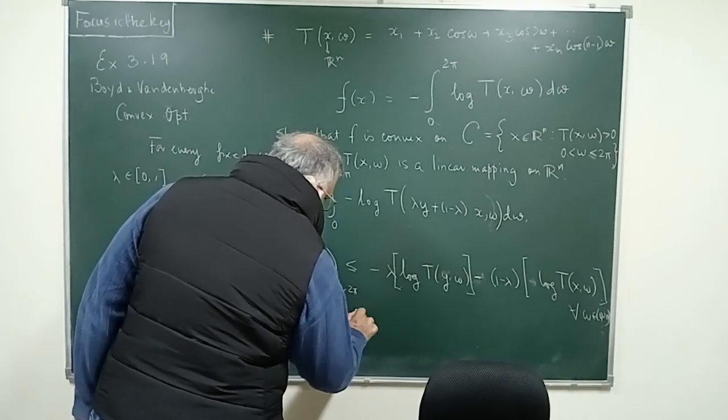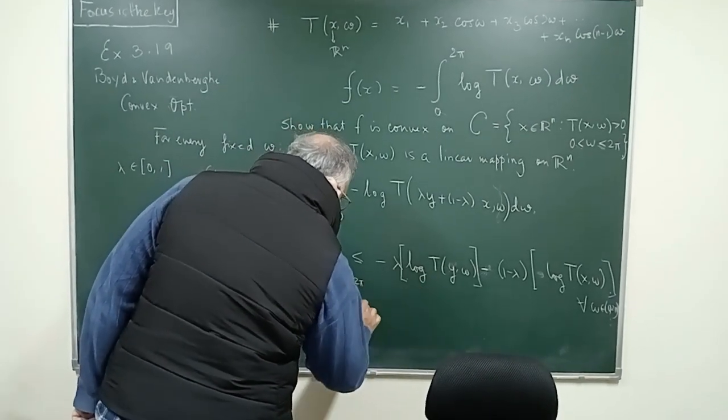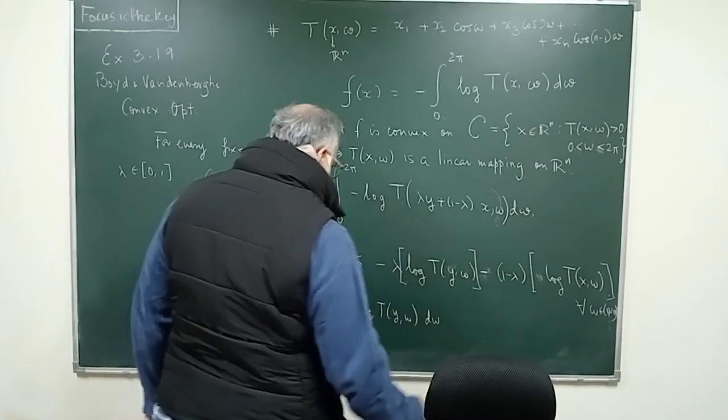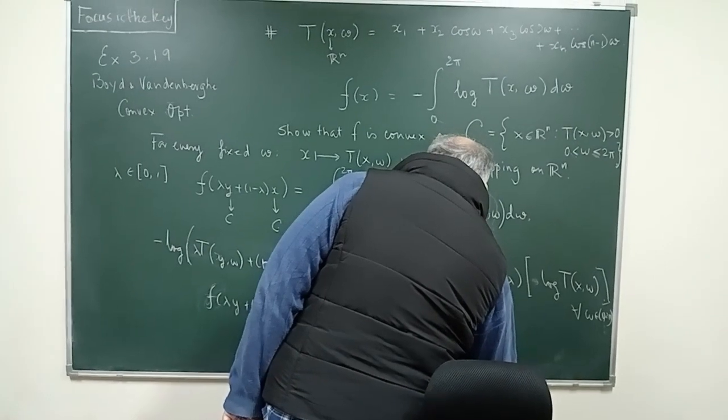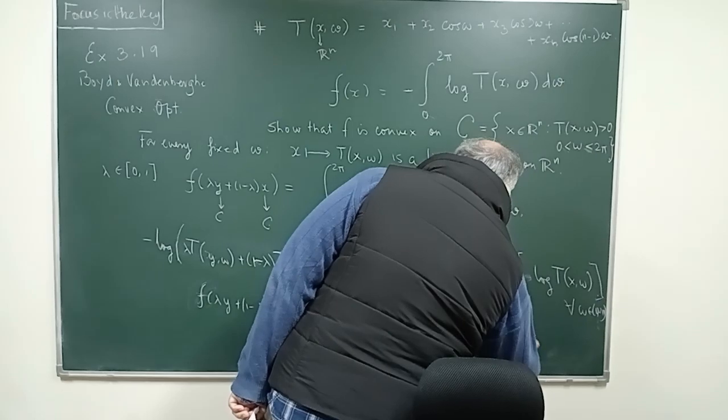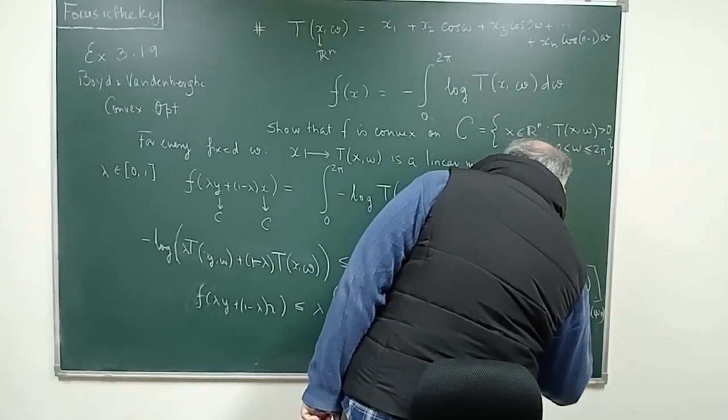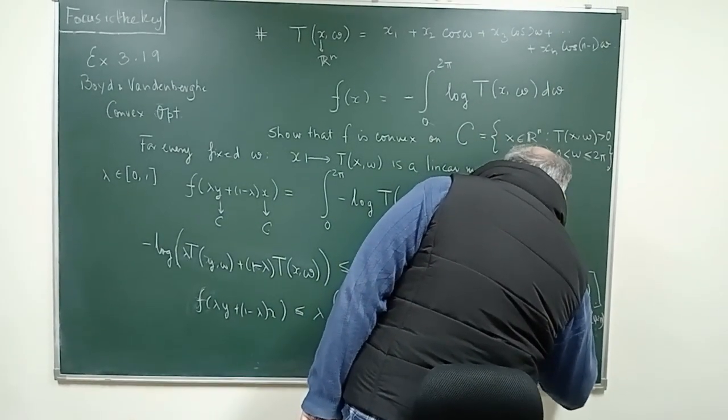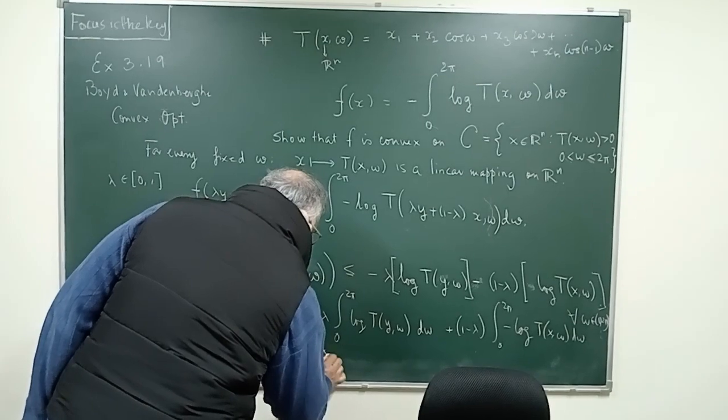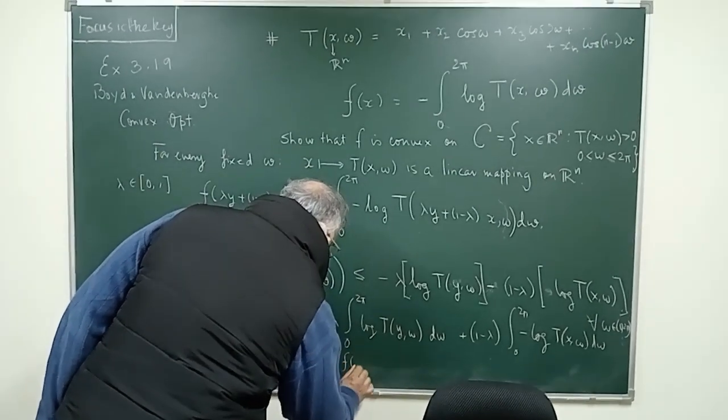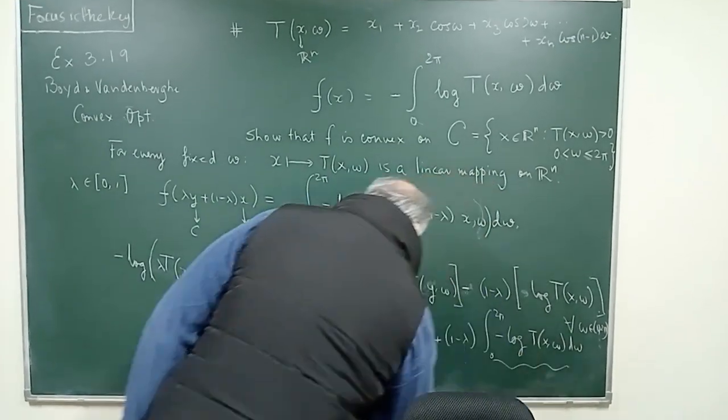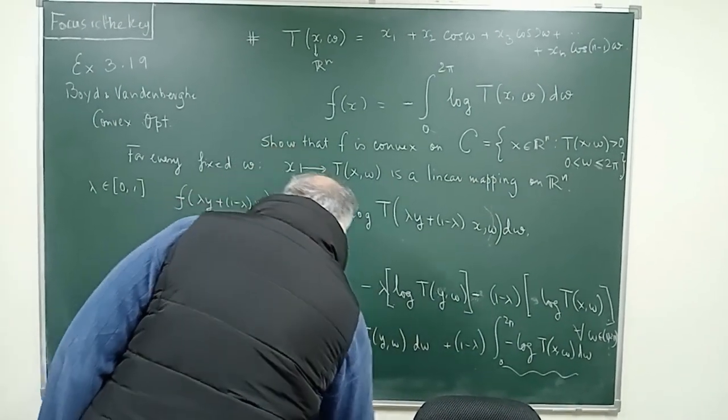I can understand that this part is nothing but this part because of the linearity of T for every ω. This will now become -log(T(y,ω)) dω plus (1-λ) times the integral from 0 to 2π of -log(T(x,ω)) dω. And what is this? This simply means this is exactly equal to λf(y) by my definition, and this part is exactly equal to f(x). So f(λy + (1-λ)x) is less than or equal to λf(y) + (1-λ)f(x).